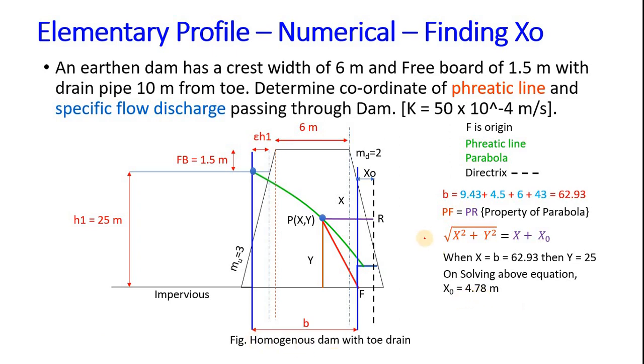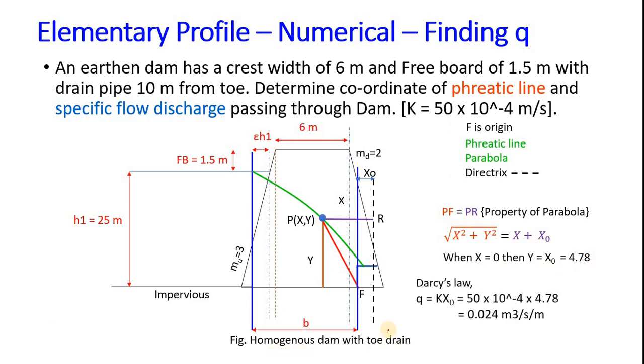On solving we will get 4.78 for x₀, so this value is 4.78. Now let's find q. We already found x₀ and b. Now our objective is to find q. This is from the property of parabola. When x equals 0, y equals x₀ which equals 4.78. x equals 0 means at this point, x equals 0, y would be square root of 4.78.